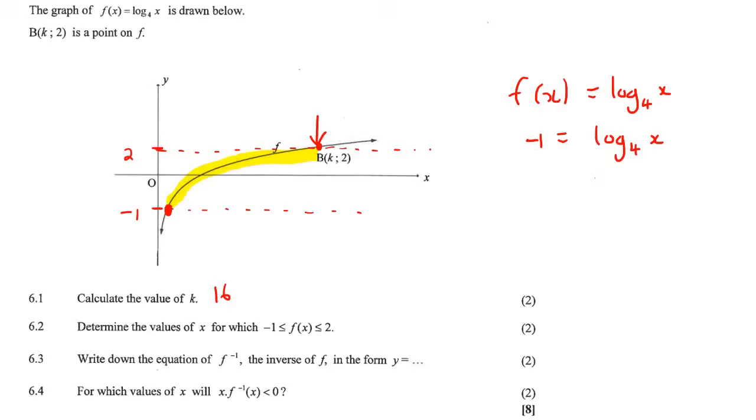So now we reverse everything again. We say 4 to the power of minus 1 equals x. And so x would be equal to, sorry, let me not switch that around, some students panic when I do that. So x would be a quarter. So that means the x value here is a quarter, and the y value is minus 1.